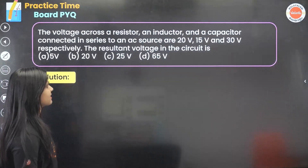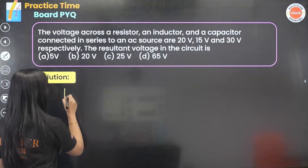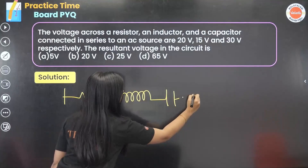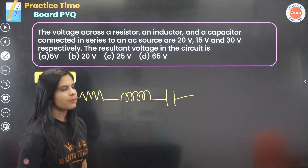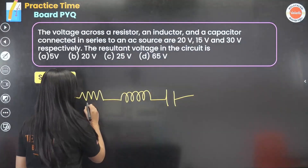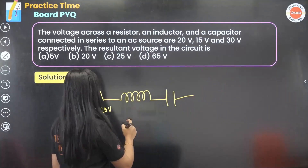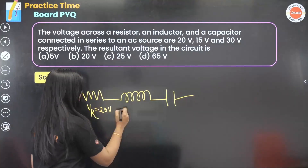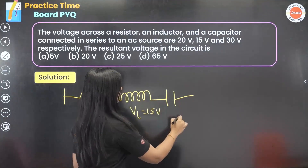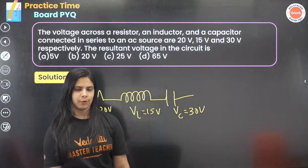The next question: the voltage across a resistor, inductor, and capacitor connected in series to an AC source. The resistor voltage VR = 20 volts, the inductor voltage VL = 15 volts, and the capacitor voltage VC = 30 volts.